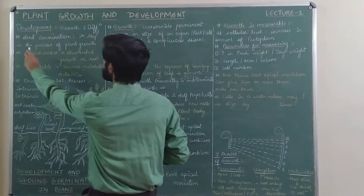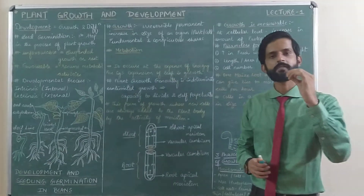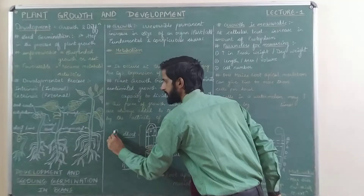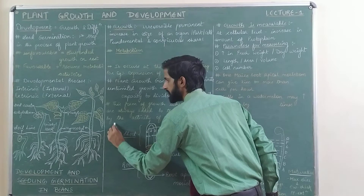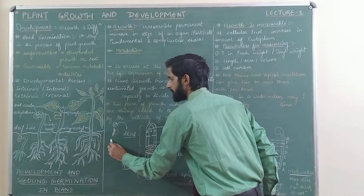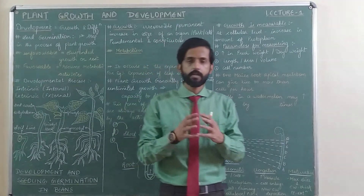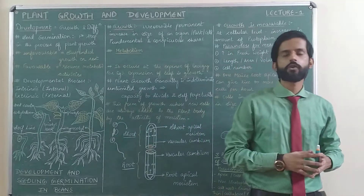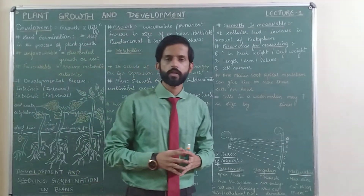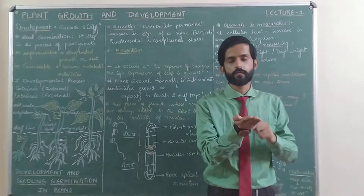Next — seed germination is the first step in the process of plant growth. This can also come in MCQs. When a seed sprouts, the upper part is called the plumule and the lower part is called the radicle. The plumule will eventually become the shoot and the radicle will become the root. When a seed germinates and forms a young plant, we call it a seedling. A plantlet is also a young plant, but remember: plantlets are formed after vegetative propagation from the margins of the leaf.